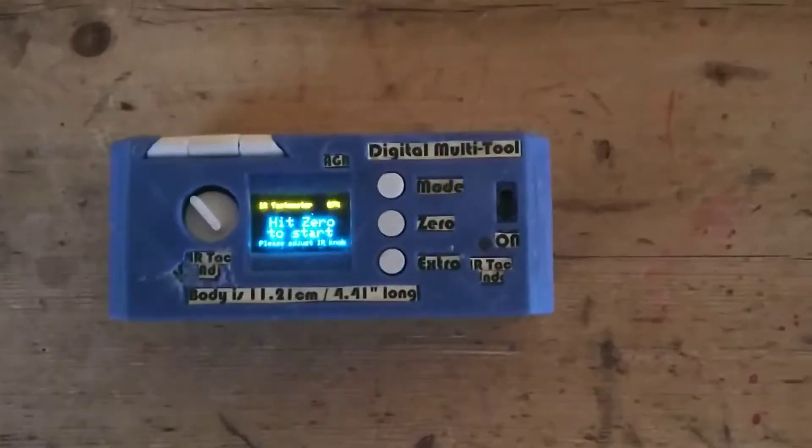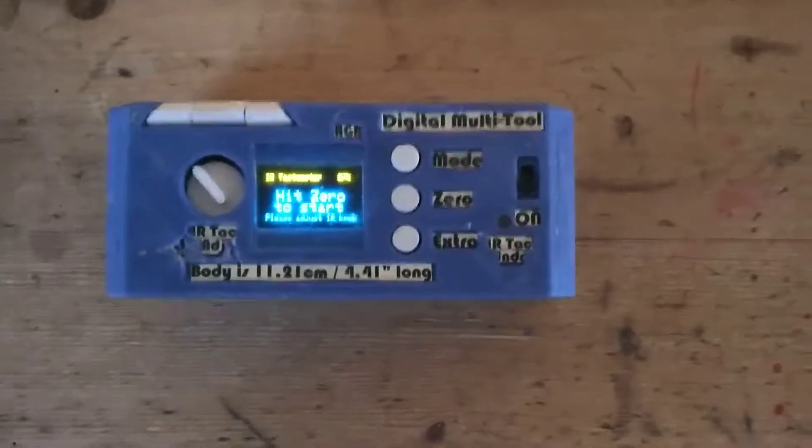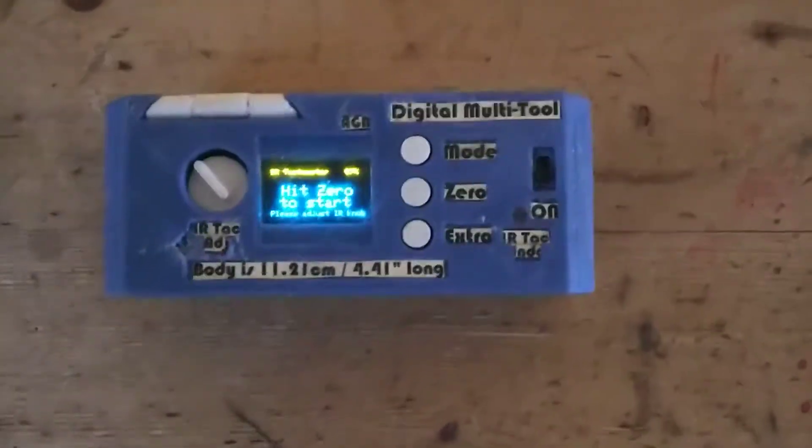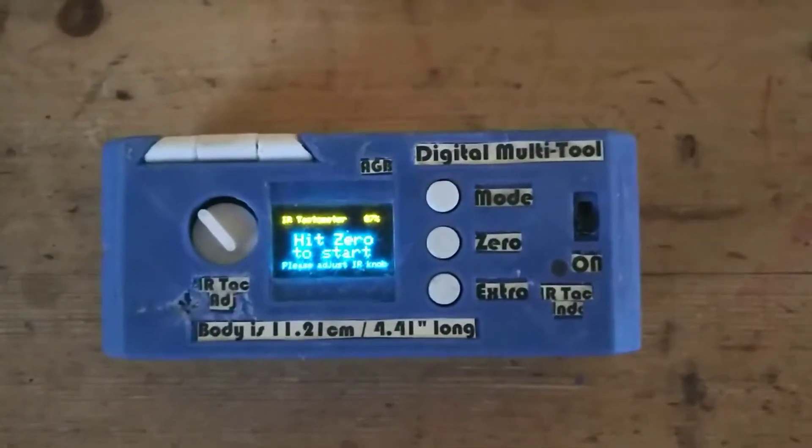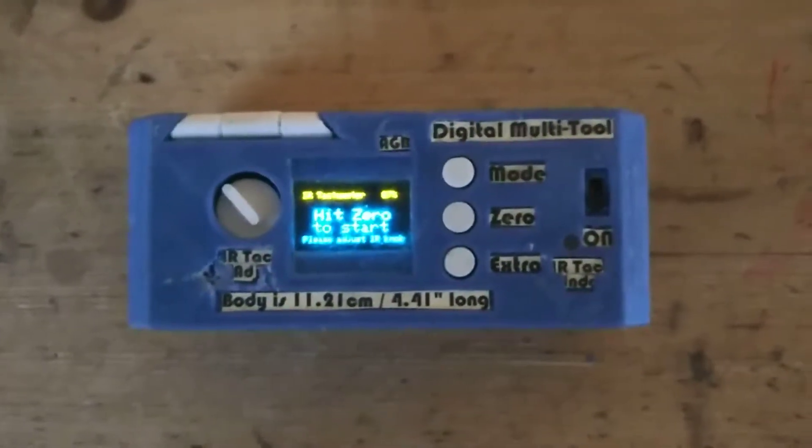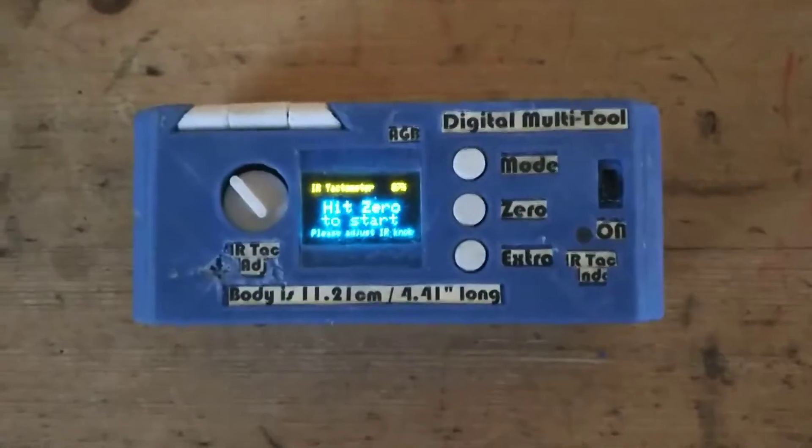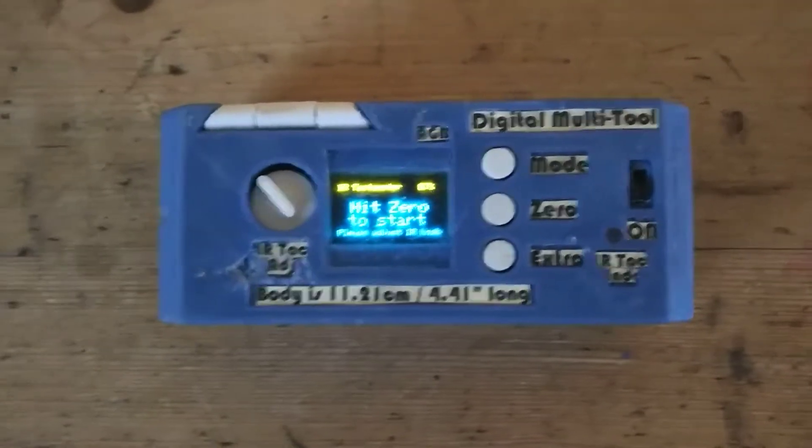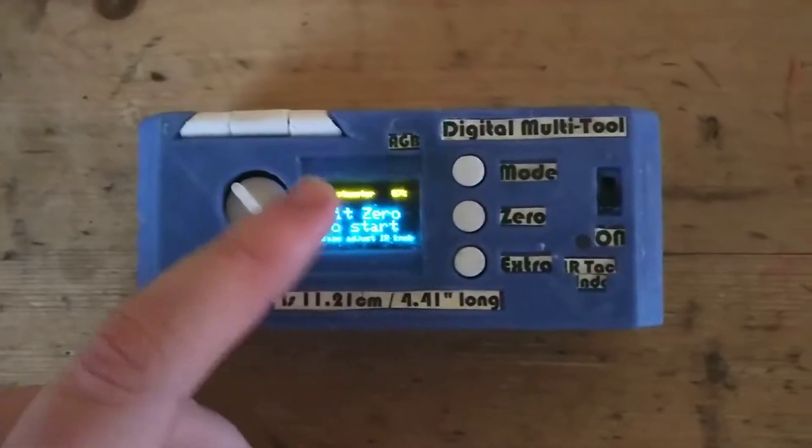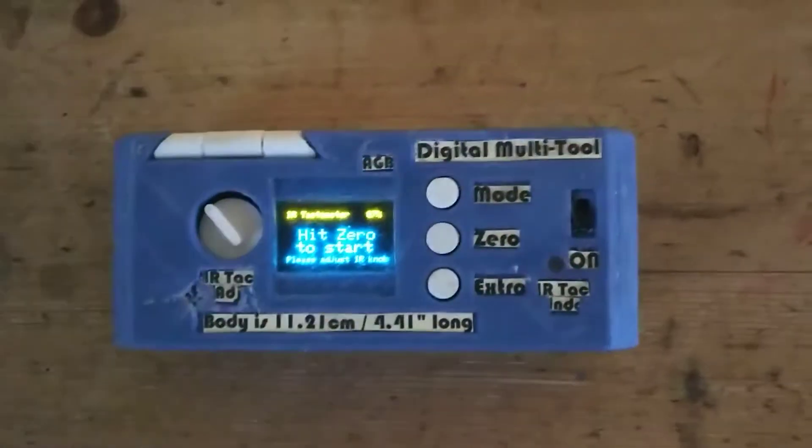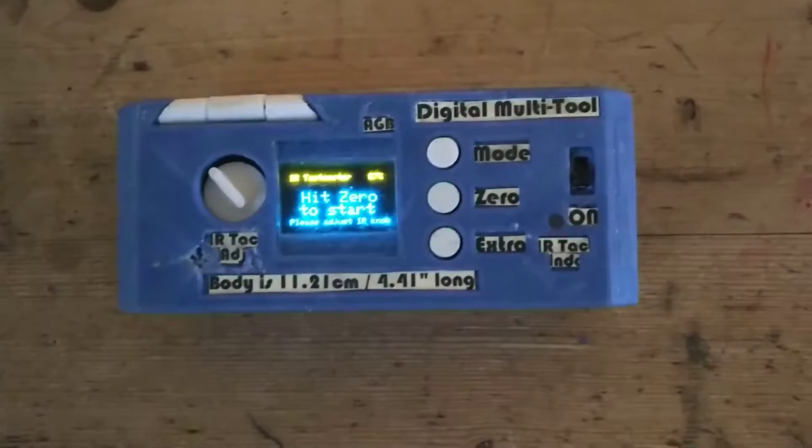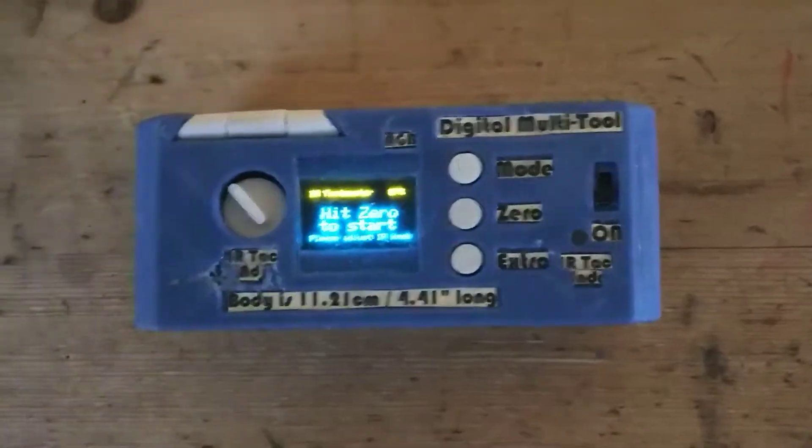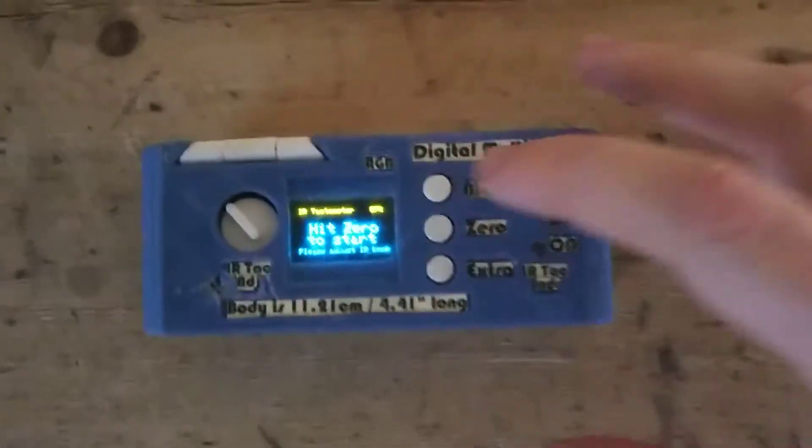So next we have a non-contact IR tachometer, so this is for if you don't want to hold the multi-tool up to something because it's spinning really fast. And you basically attach a piece of IR tape to the object, you adjust this knob until you reach the right threshold. You can see more details in the instructions in the instructable and it will also read RPM just like the wheel tachometer.